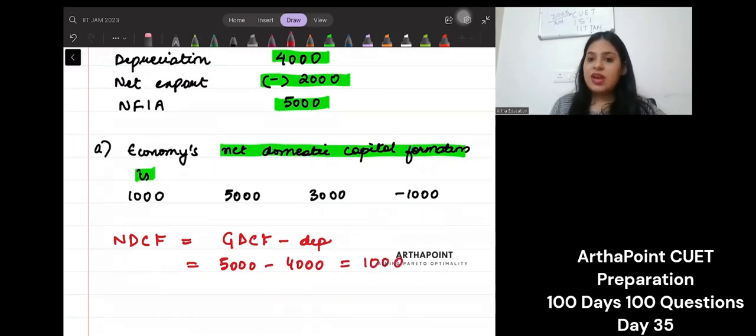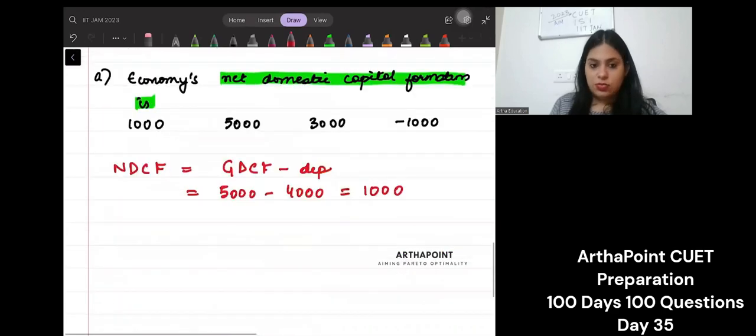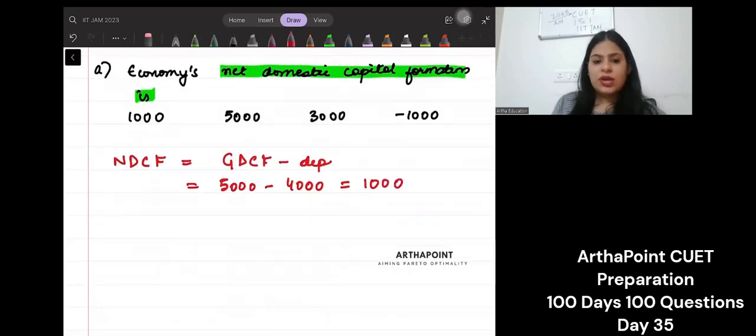Is this clear? Very simple. It just says you have to find net domestic capital formation. Now, please go ahead and on very similar note, let us take one more question based on it.